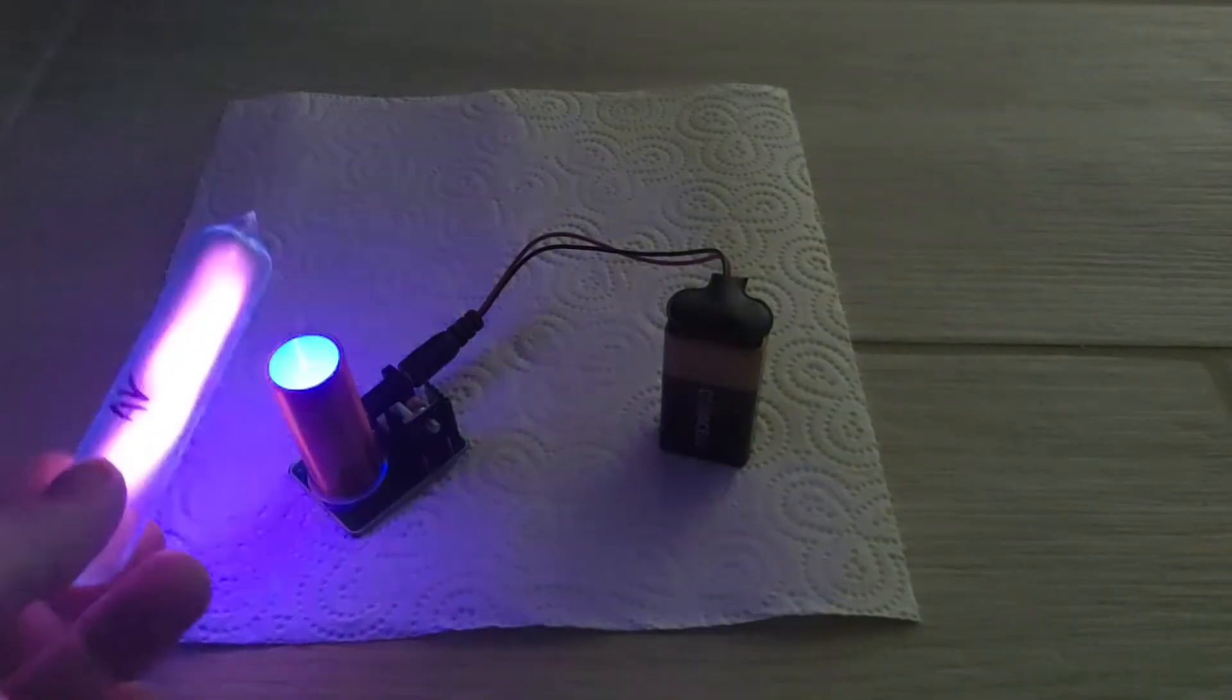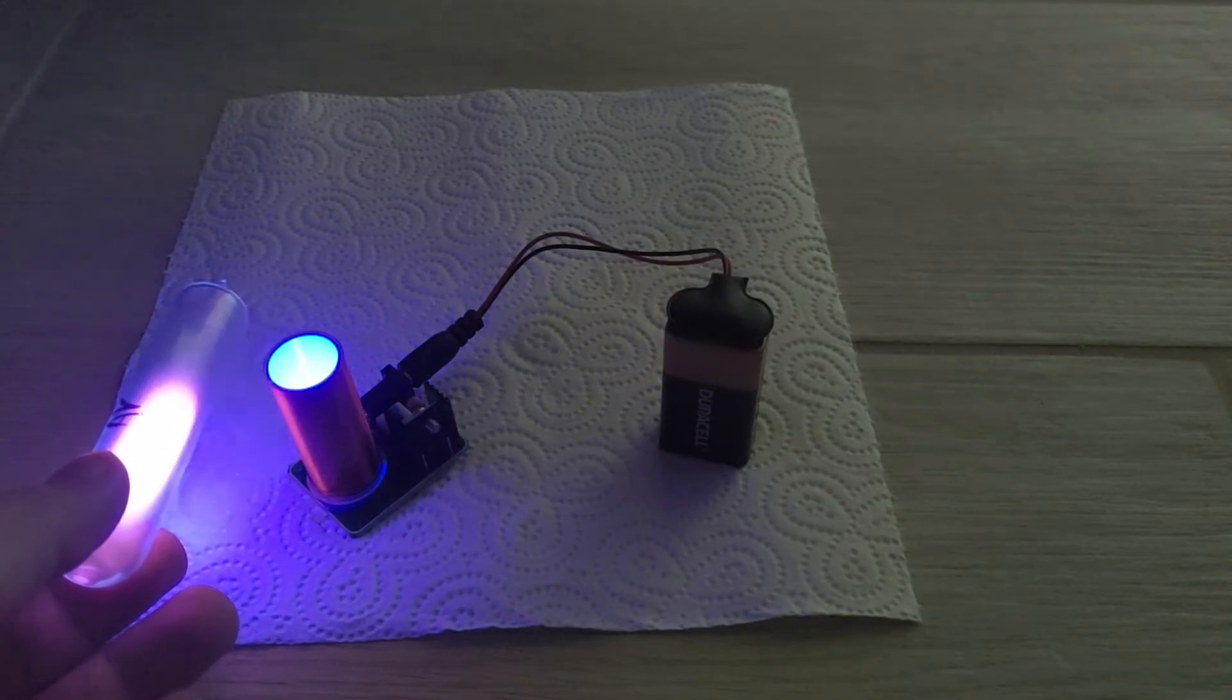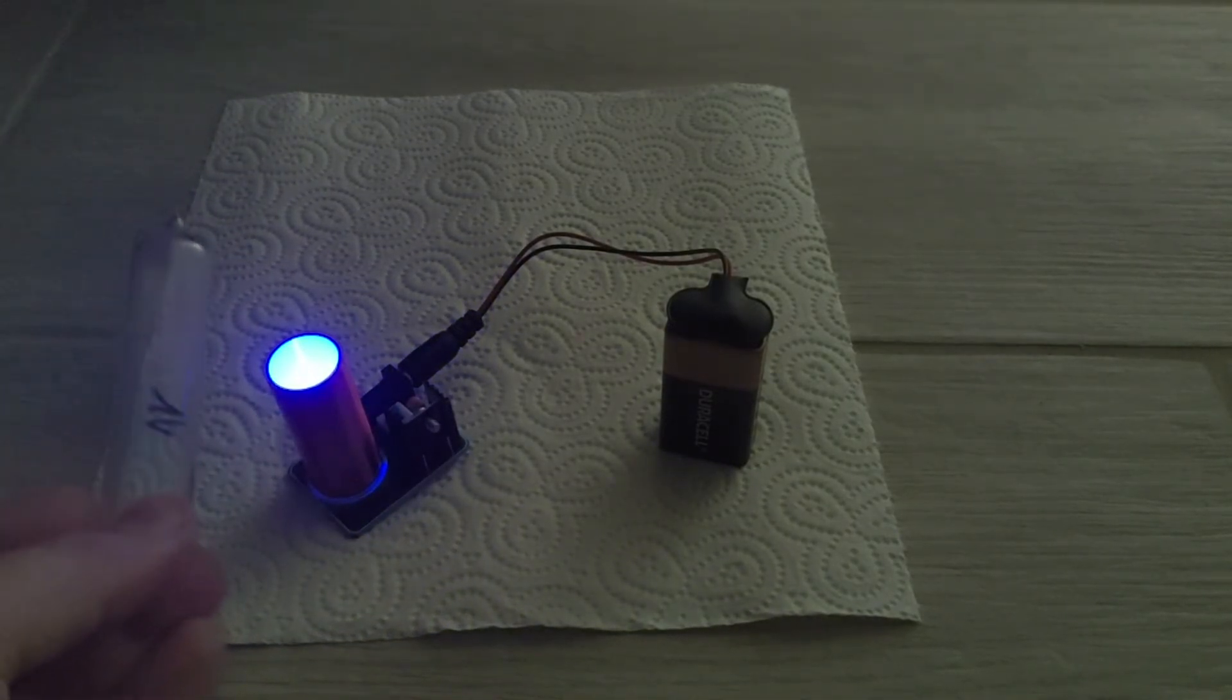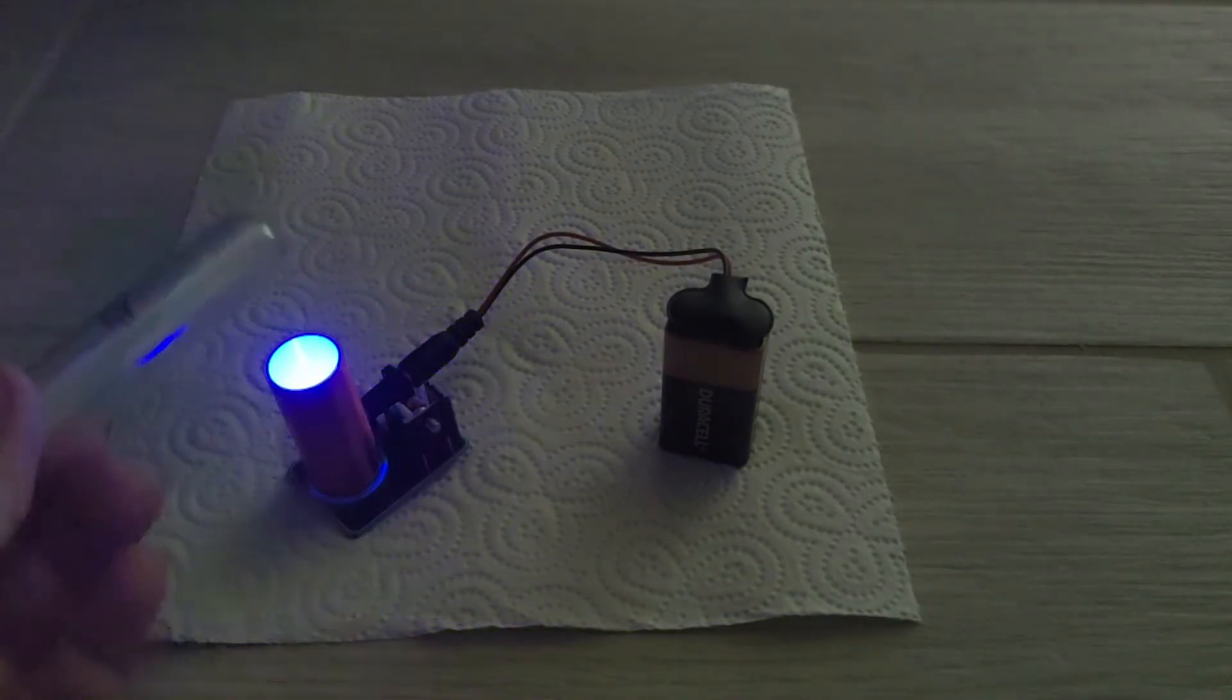The Tesla coil is discharging into the glass tube. The gas inside is at a vacuum pressure and that's the reason why it lights up. Different gases have different colors as you could see.